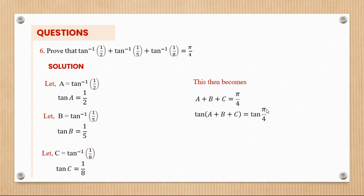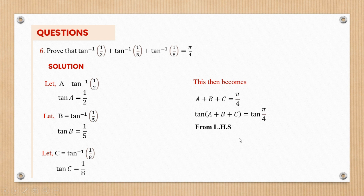The next step is to introduce tan to both sides, so we have tan of (a plus b plus c) equals tan of pi over four. Now I have to prove that tan of (a plus b plus c) gives me tan pi over four. Note that tan pi over four equals one, the same as tan of 45 degrees, so I have to prove this structure gives me one.